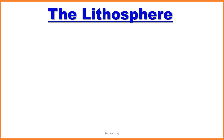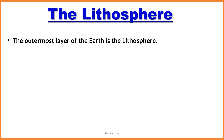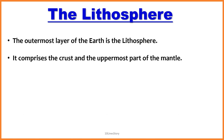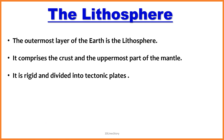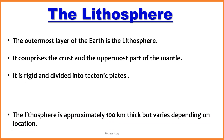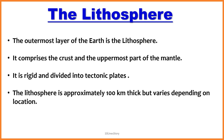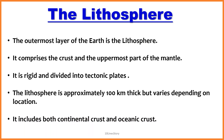Welcome back to Tenline Story Channel. Today's topic is the Lithosphere. The outermost layer of the earth is the lithosphere. It comprises the crust and the uppermost part of the mantle. It is rigid and divided into tectonic plates. The lithosphere is approximately 100 km thick but varies depending on location. It includes both continental crust and oceanic crust.